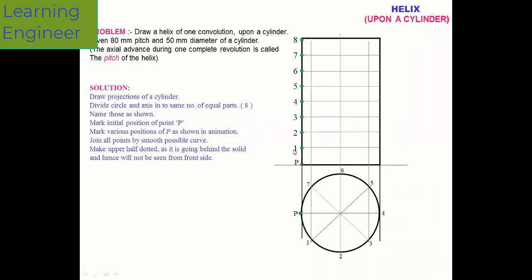Wherever the horizontal line from point one and the vertical line from point one intersect, mark that point. Horizontal from two and vertical from two gives P2. Mark P3, similarly P4, P5, P6, P7. Give the naming P1, P2, P3 — intersecting horizontal from six with vertical from six, horizontal from seven with vertical from seven.